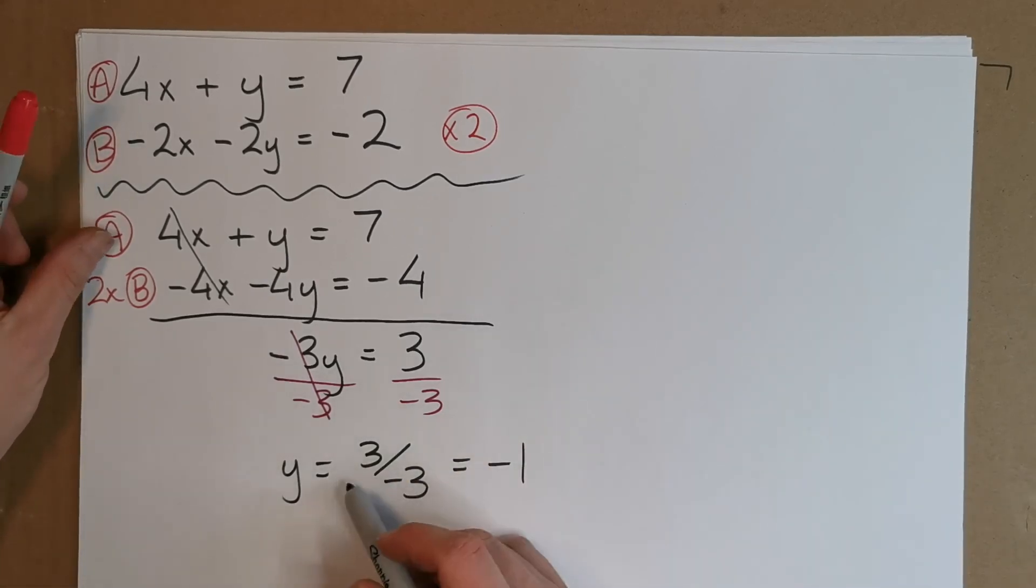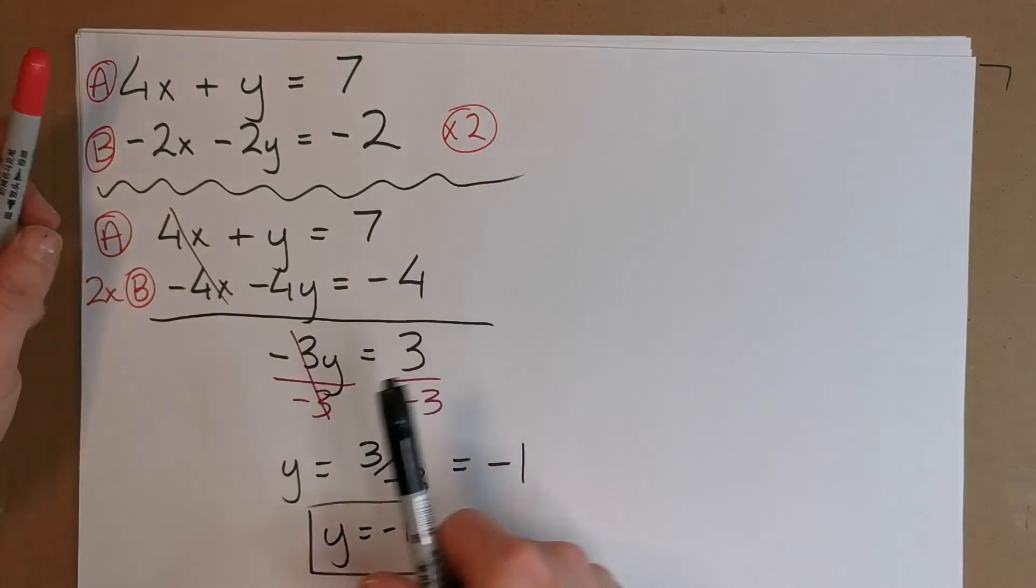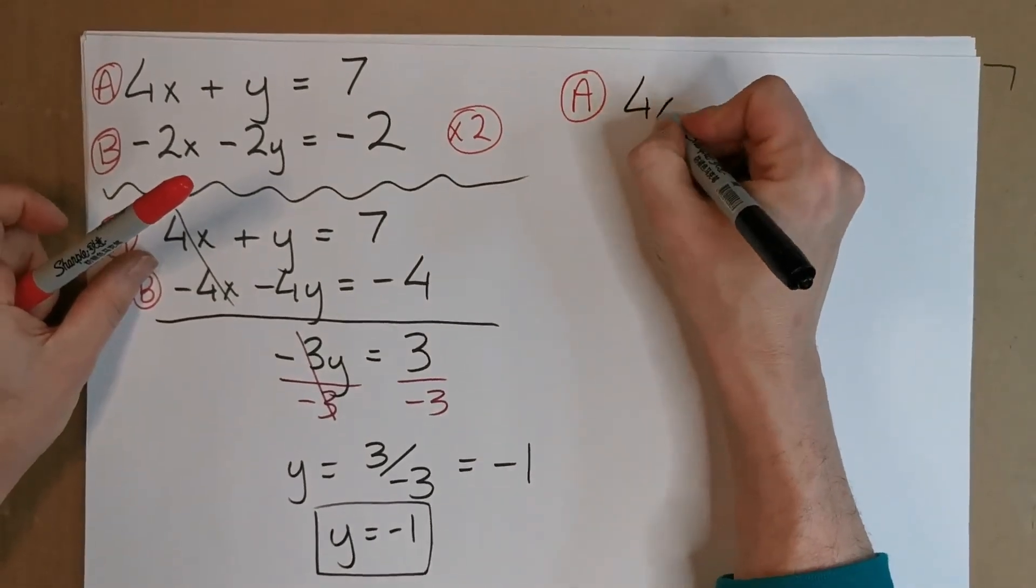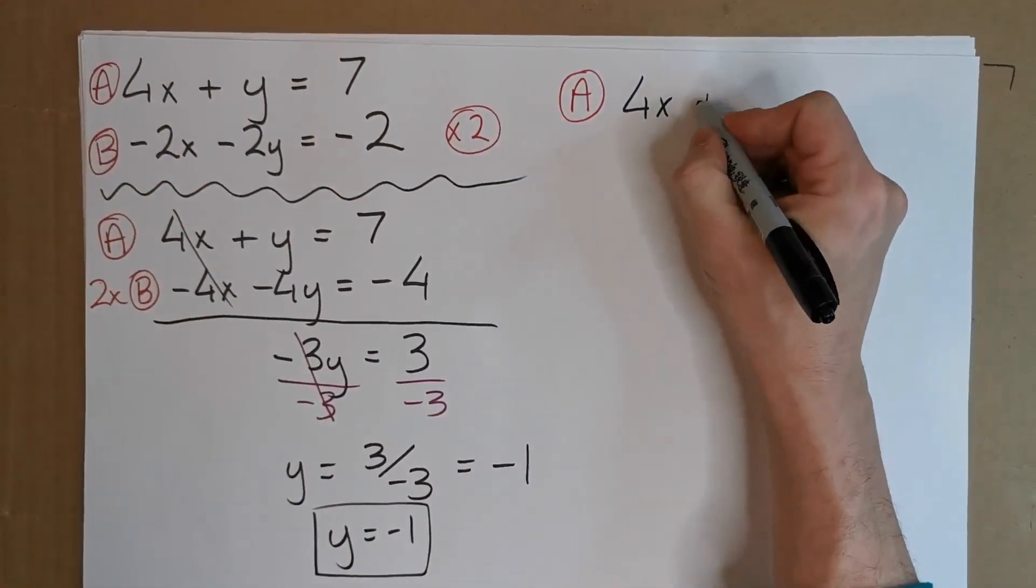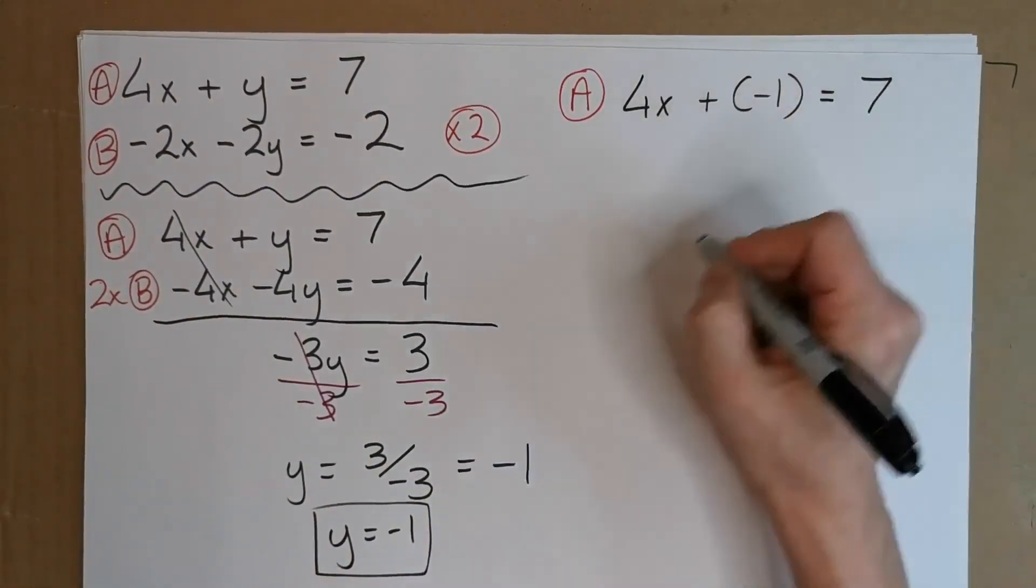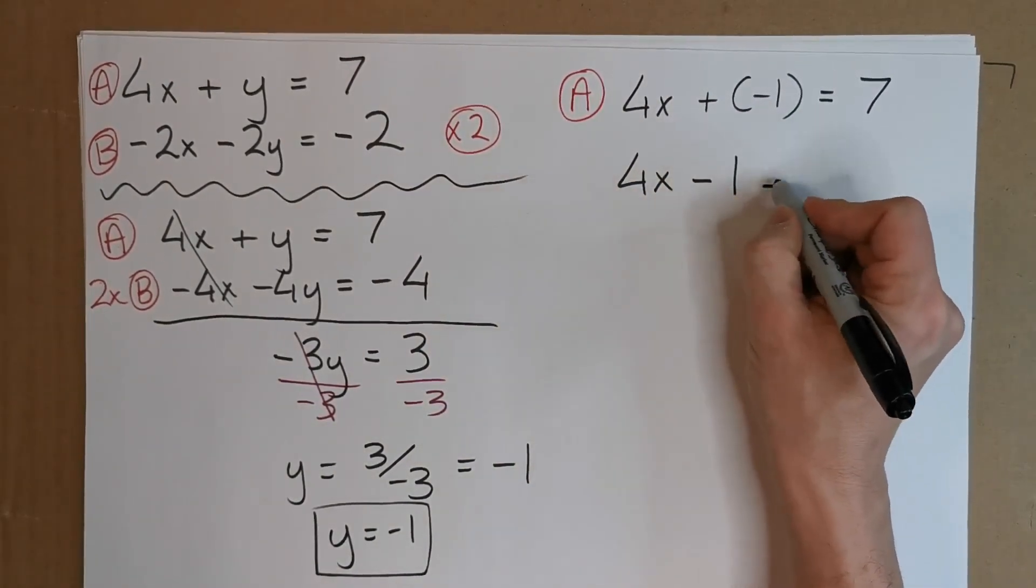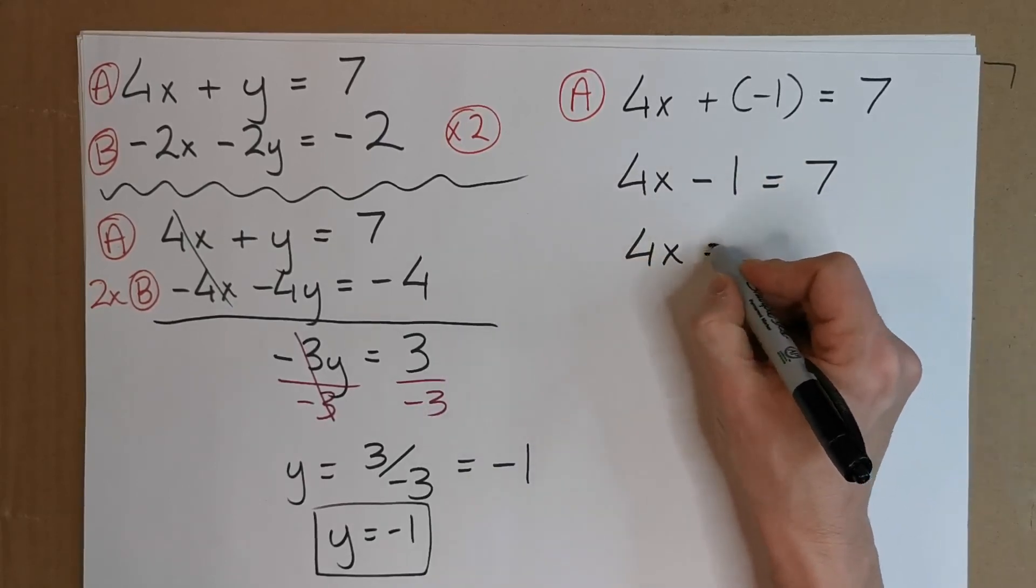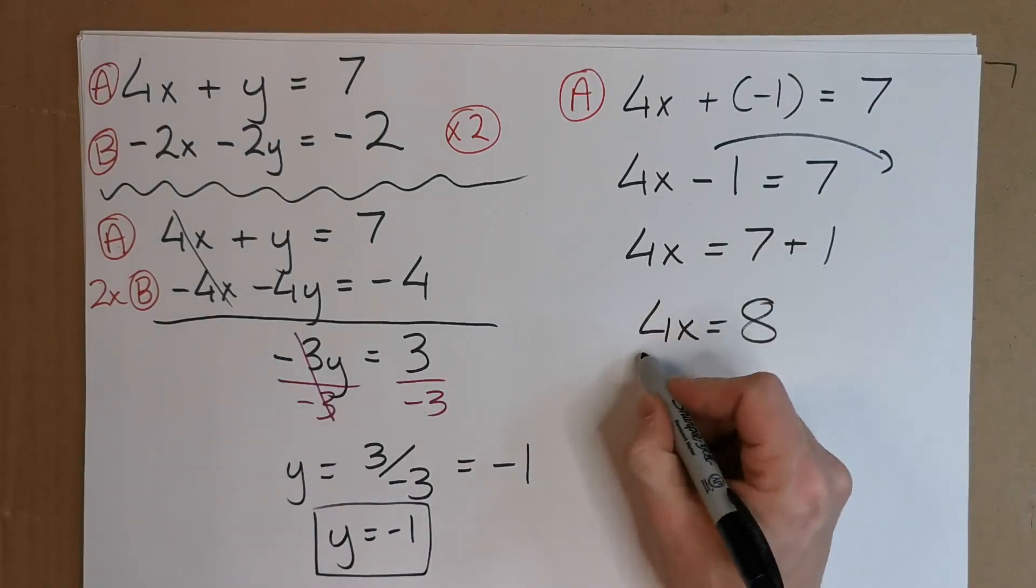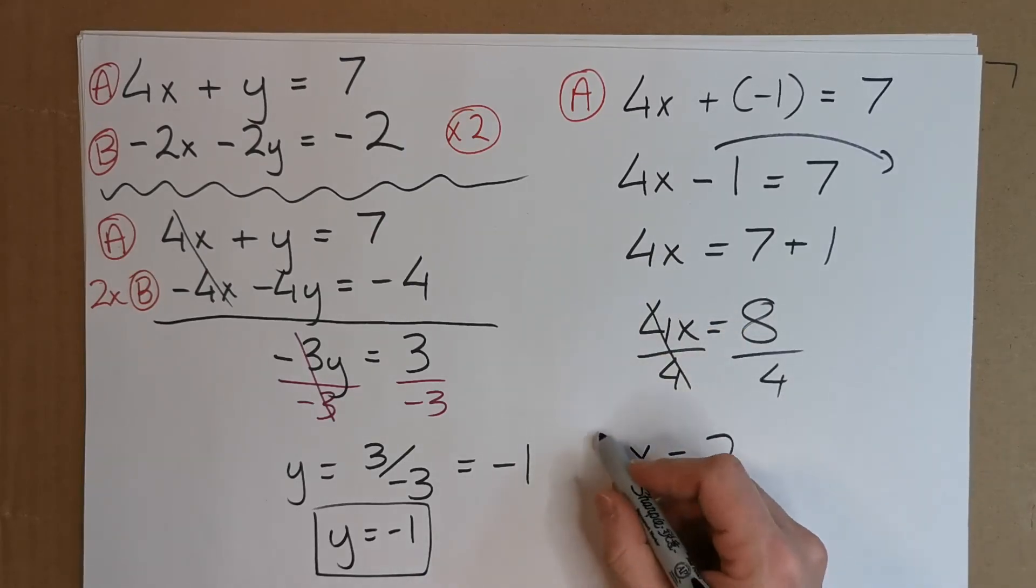Now, with this done, we can put this value for Y, which is minus 1, back into any original equation. So, let's take A here. A is now going to be 4X and a plus, now it's a minus 1 instead for Y, and that's equal to 7. So, 4X, a plus by a minus, so it's like minus 1. So now 4X equals 7, and this now comes over, becomes a plus 1. Then, 4X equals 8, divide both sides by 4. X equals 8 over 4, X equals 2. That's it.